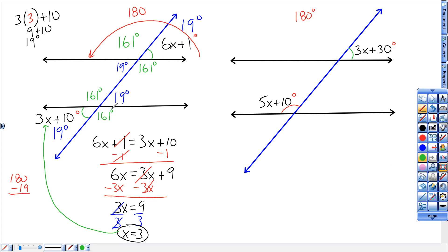Alright, last problem. These are not equal. They're supplementary. So I'm going to take 3x plus 30 and take that 5x plus 10 and set that equal to 180.